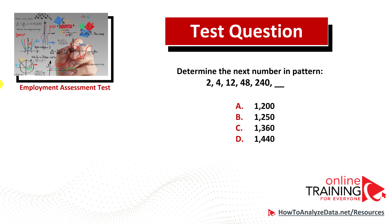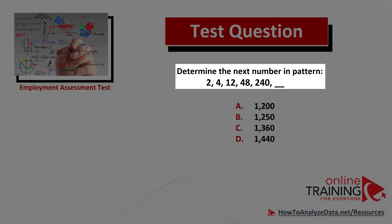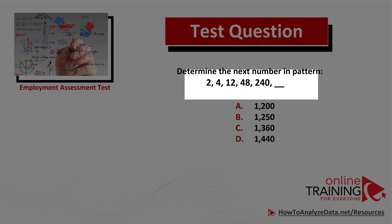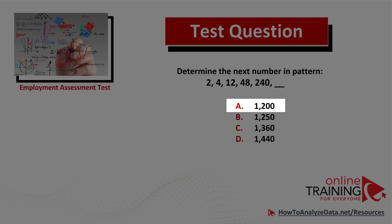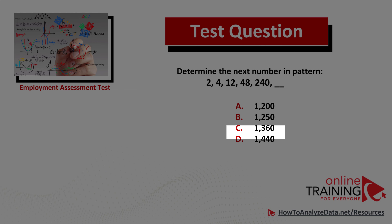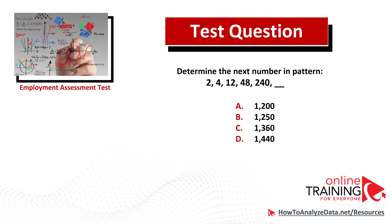Now I would like you to try another pattern question. If you know the answer, please post it in the comment section of this video. Determine the next number in the pattern: 2, 4, 12, 48, 240. Choices: A, 1,200; B, 1,250; C, 1,360; D, 1,440. Please post your answer in the comments and I'll provide my feedback. Thanks for participating.